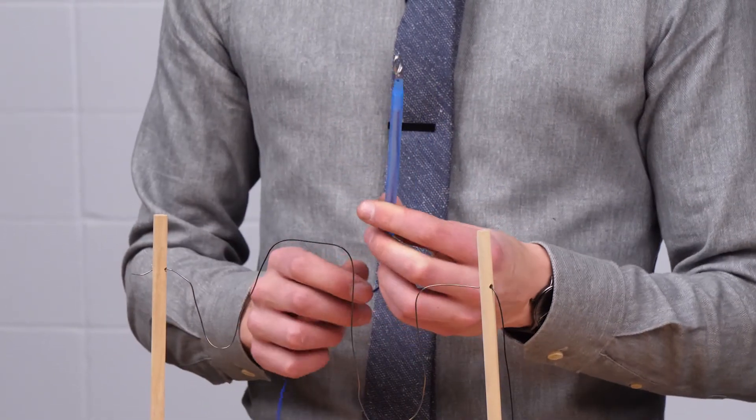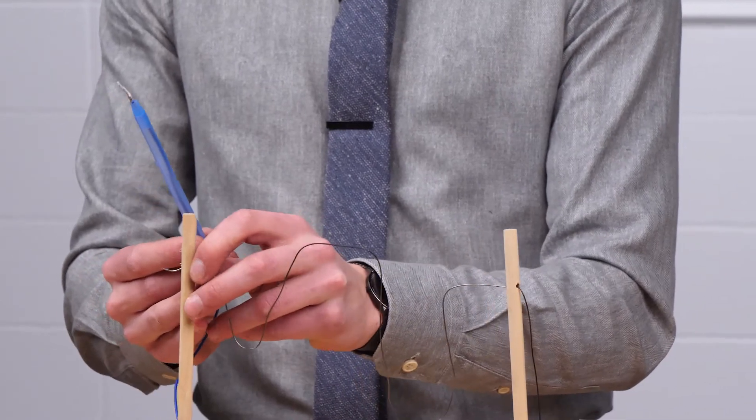Next, we're going to take this loop and thread it onto our existing steel wire.